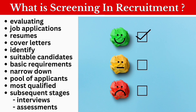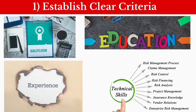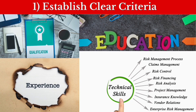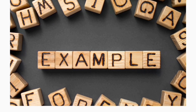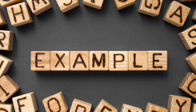Let's see how we can screen candidates with examples. First: Establish Clear Criteria. This means I need to note down exactly what I need in the actual candidate. For example, if we are hiring a software developer, the clear criteria would be: a degree in Computer Science, proficiency in specific programming languages, and a minimum of three years of relevant experience. This criteria varies by company — it could be two, five, or six years.